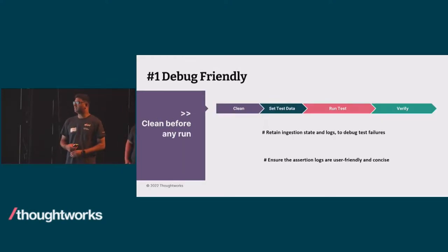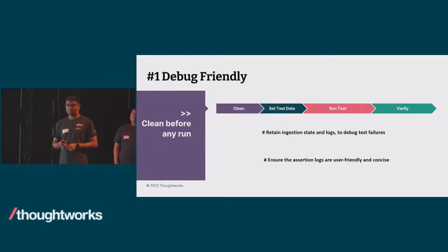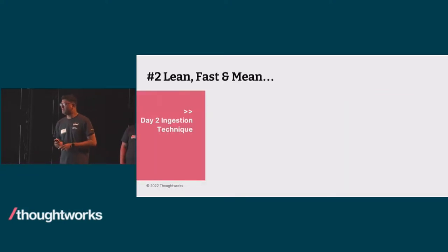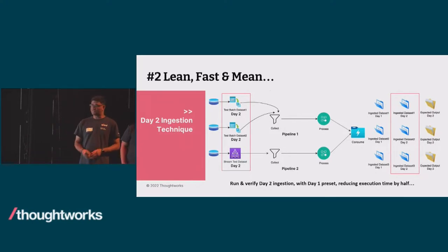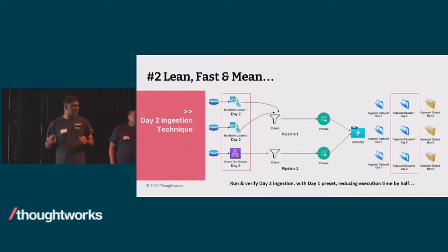When we say it's debug-friendly, we can get all the ingestion states and logs, and the assertion log messages are user-friendly and concise — so users can quickly identify where a failure occurred. For lean, fast, and mean: because we did the day one ingestion beforehand, execution time was reduced by half. We could run and verify data ingestion quickly since all tables and columns were already set up.